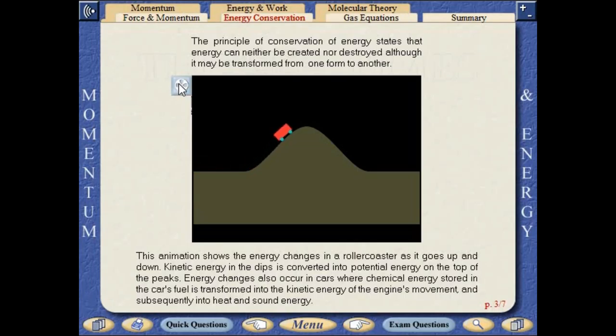This animation shows the energy changes in a roller coaster as it goes up and down. Kinetic energy in the dips is converted into potential energy on top of the peaks. Energy changes also occur in cars, where chemical energy stored in the car's fuel is transformed into the kinetic energy of the engine's movement, and subsequently into heat and sound energy.